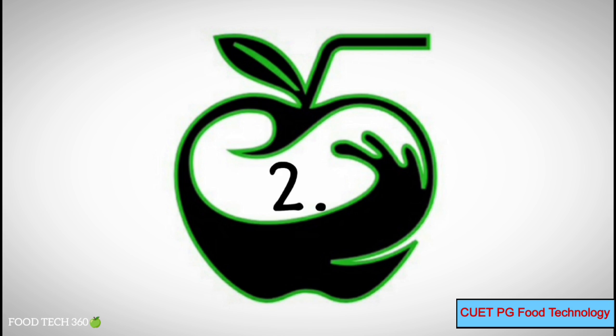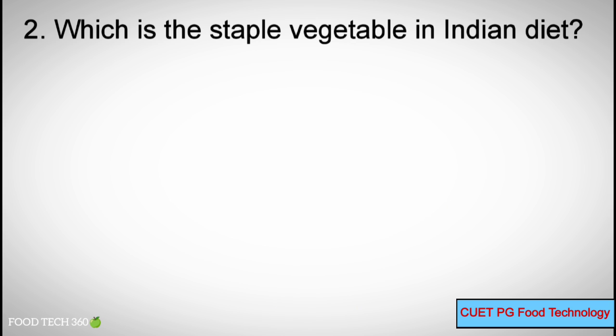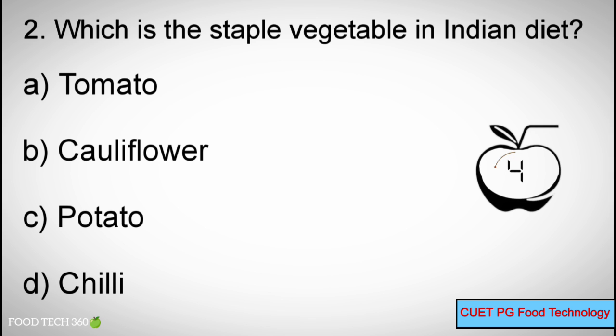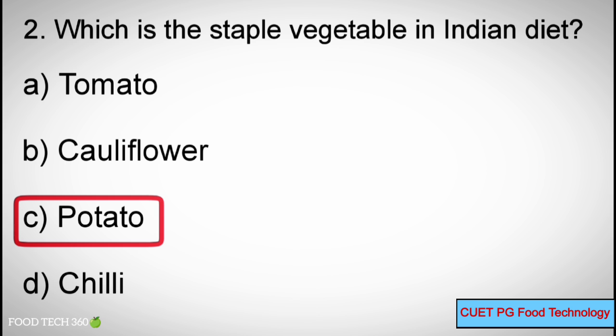Q2: Which is the staple vegetable in the Indian diet? A. Tomato, B. Cauliflower, C. Potato, D. Chilli. Correct answer: C. Potato.